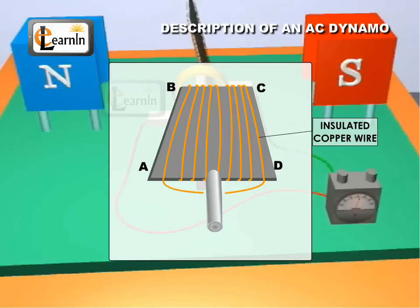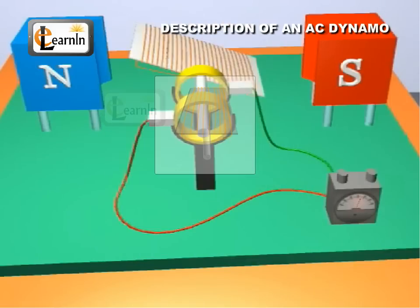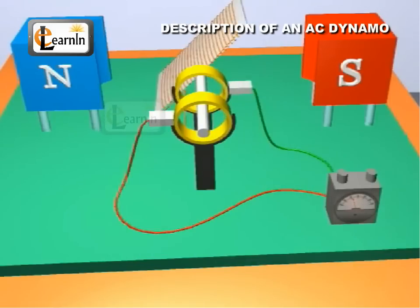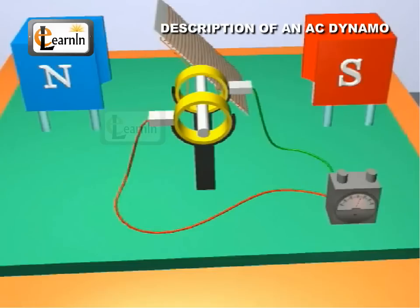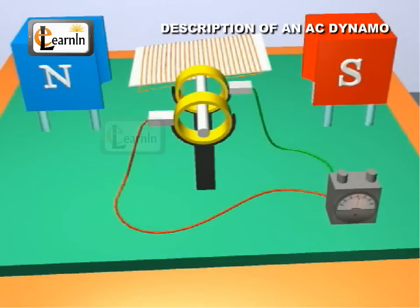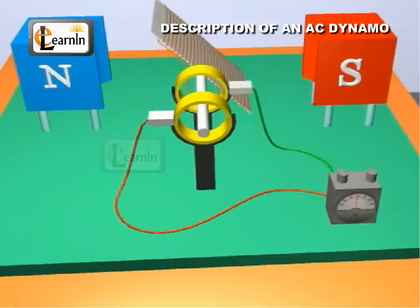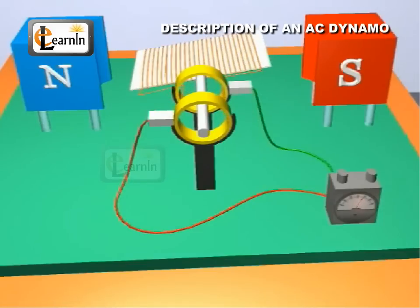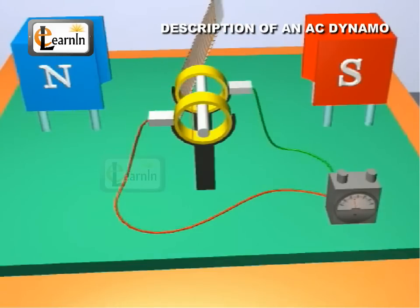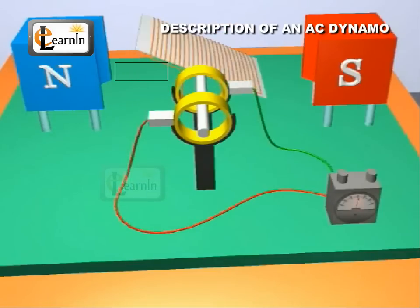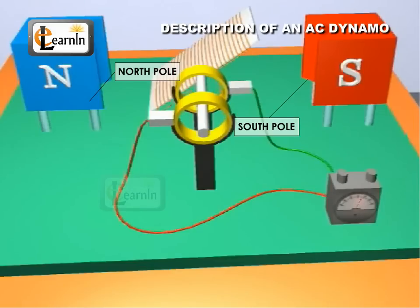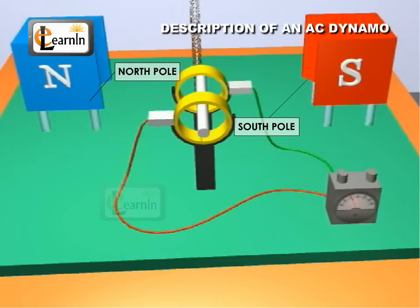The armature coil is wound on a cylindrical soft iron core. The armature is rotated rapidly about a horizontal axis perpendicular to the magnetic field. NS represents the poles north and south and is a permanent horseshoe magnet. It provides a stationary magnetic field.